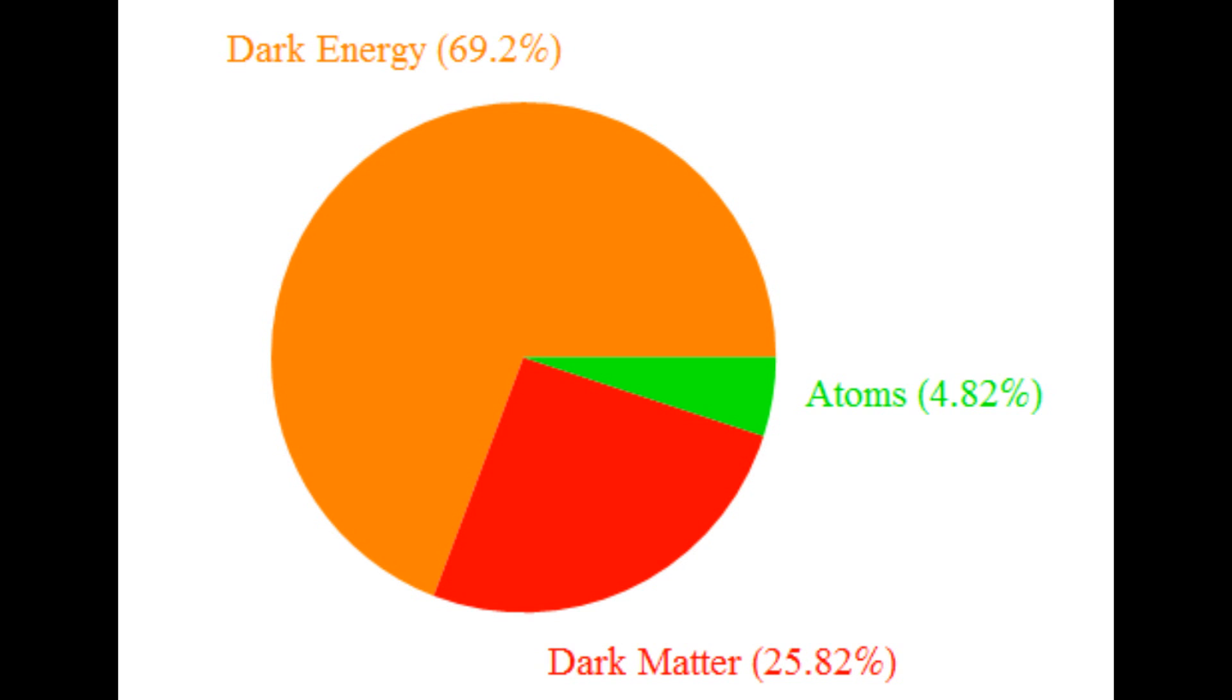Most of the mass of the universe is made of stuff which cannot emit any light at all. This includes the 69.2% of the mass of the universe that's in dark energy, and the 25.82% that's in dark matter. So 95.02% of the mass of the universe comes from stuff that, by their very nature, are completely incapable of emitting light.